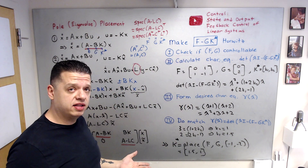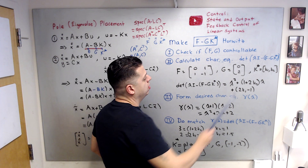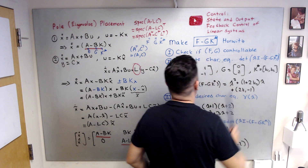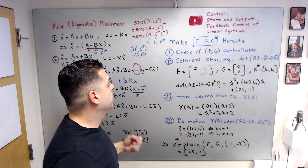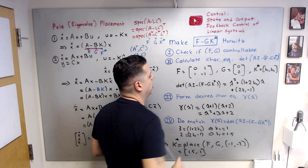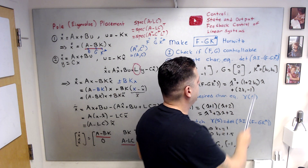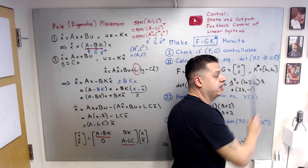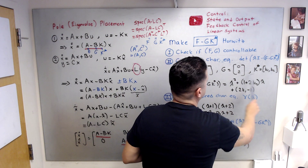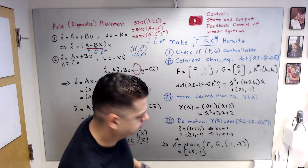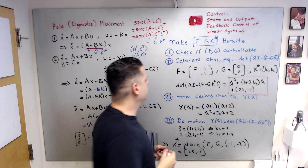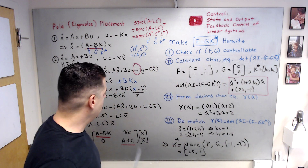Step two: find the actual characteristic equation by computing det(λI - (F - GK*)). For example, with F = [[0, 1], [1, -1]] and G = [[0], [2]], and K* = [k1, k2], computing the determinant gives the characteristic polynomial. Mark this polynomial — it will be used in the final matching step.